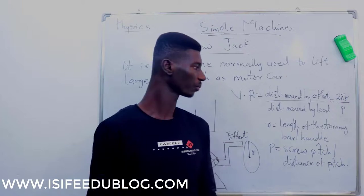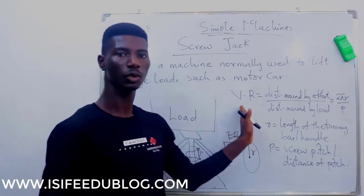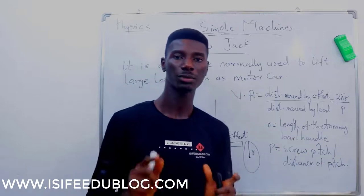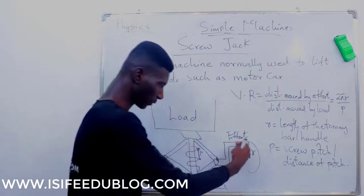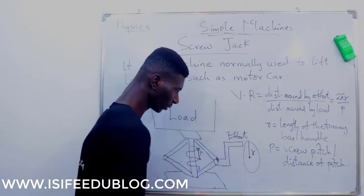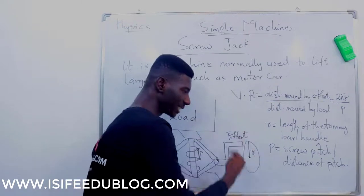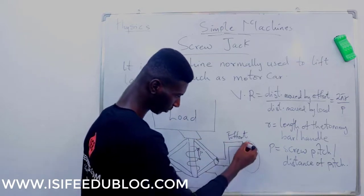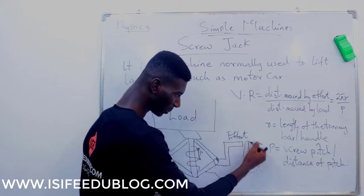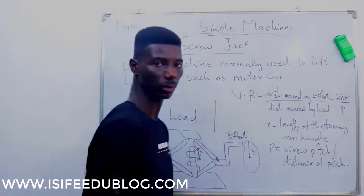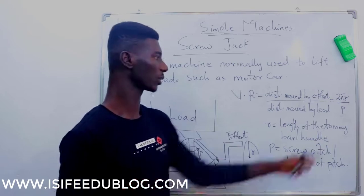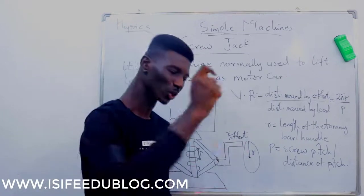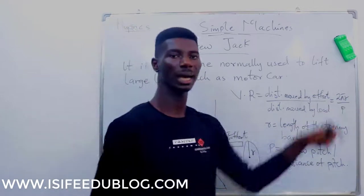The problem is that most of you always cram formulas. Remember: the standard formula — no matter what the machine is — for velocity ratio is distance moved by effort divided by distance moved by load. The distance moved by effort is a rotational motion; as you are rotating, you are making a circle. The distance you are moving is the circumference of a circle, which is 2πr.